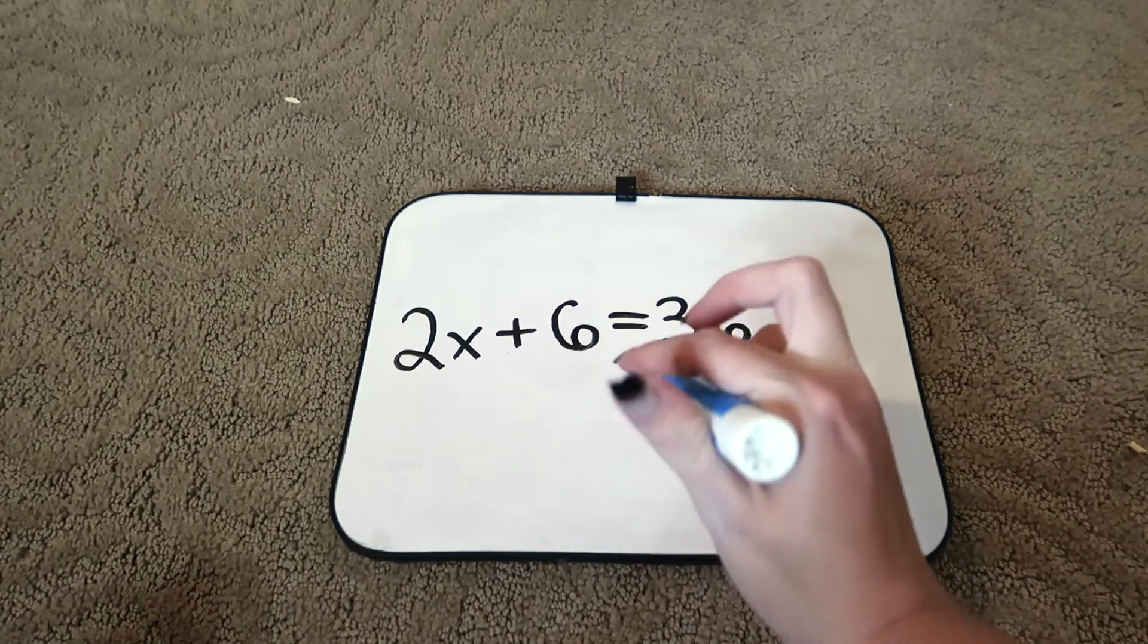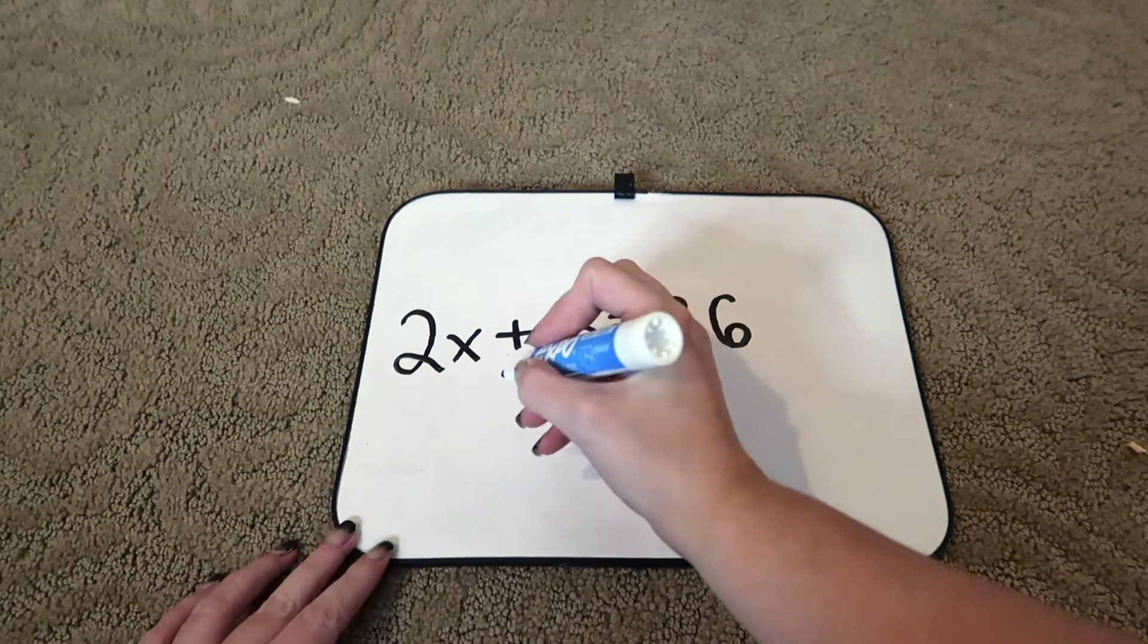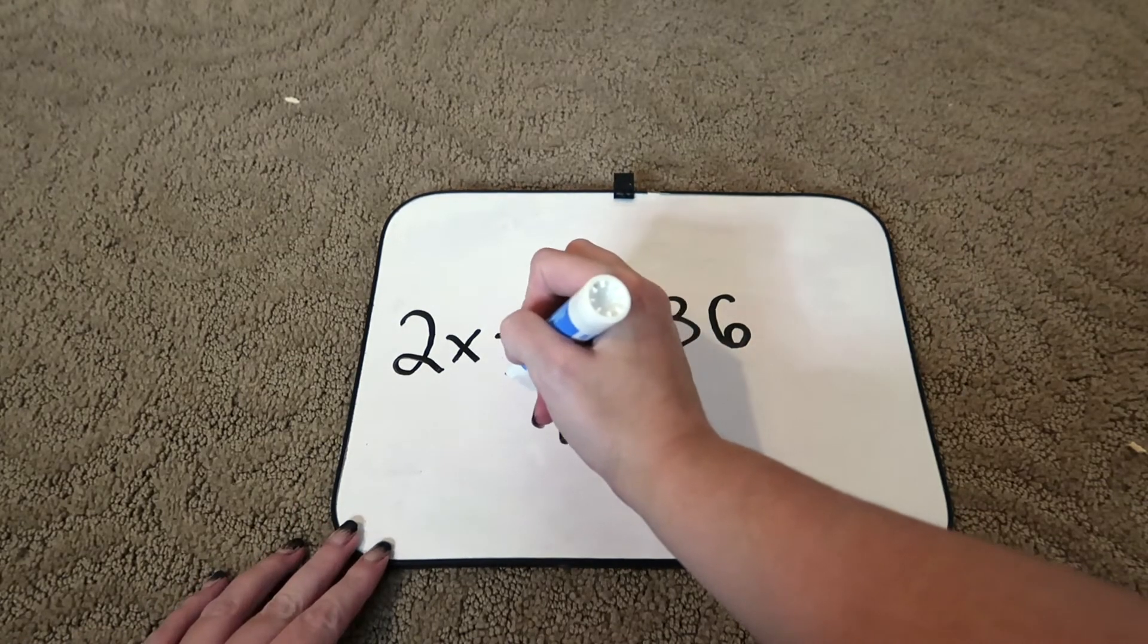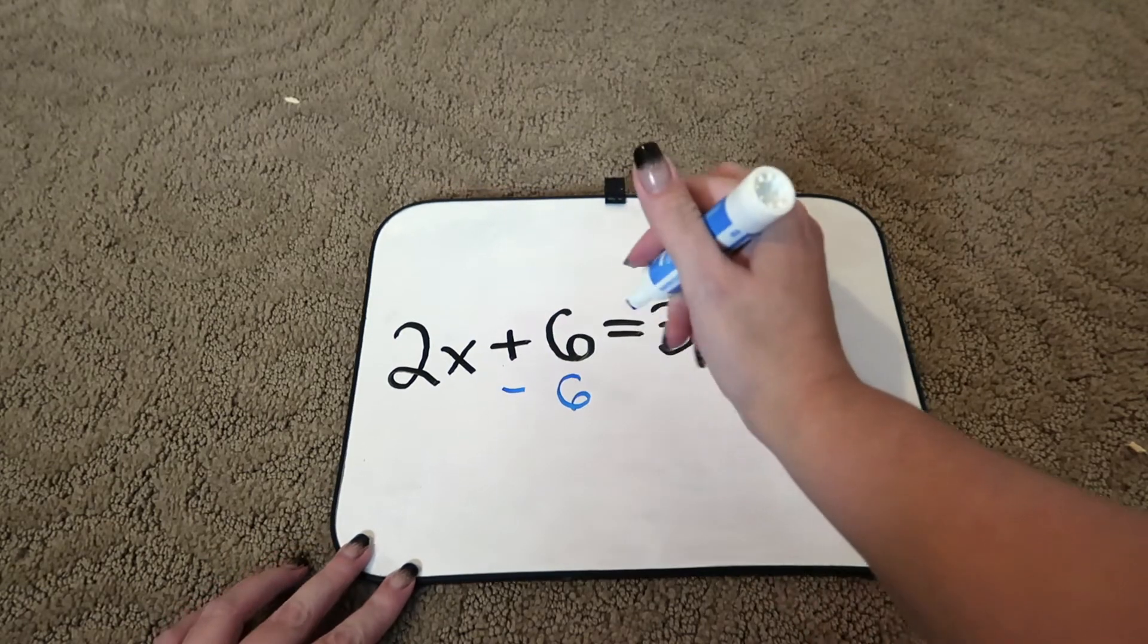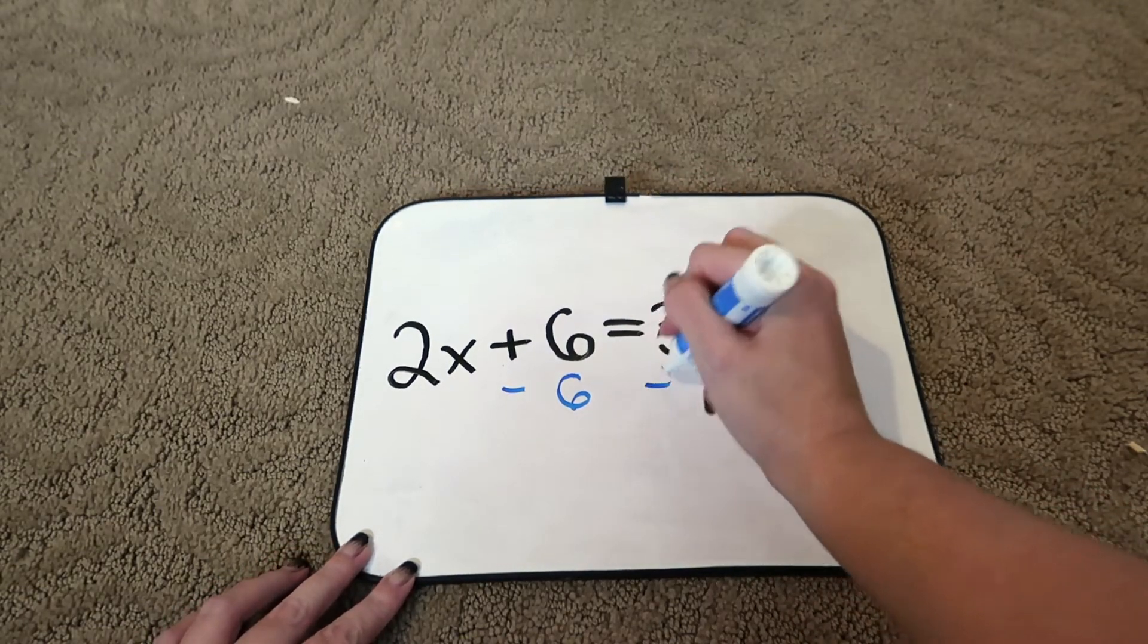And since there is a plus 6 here, we want to get rid of it. So the opposite of plus 6 is minus 6. So we're going to minus 6 here. Minus 6 over here.